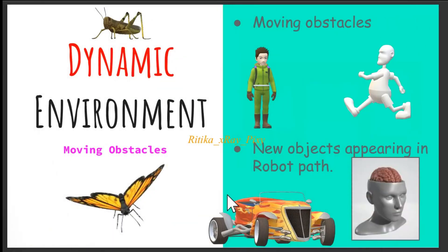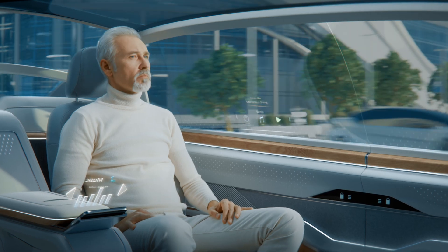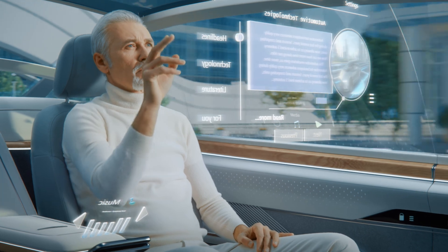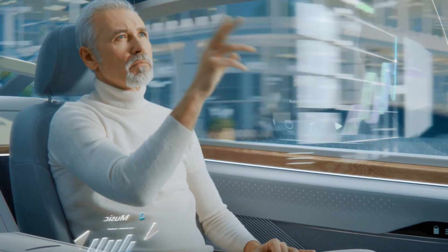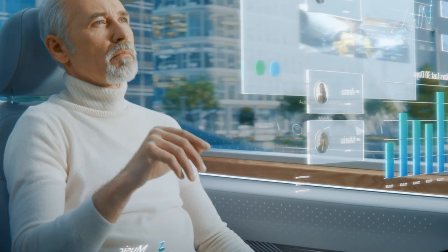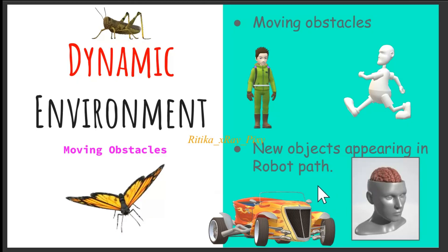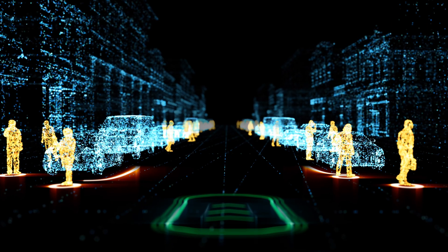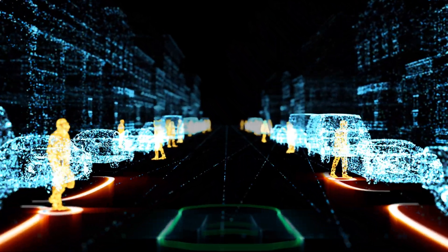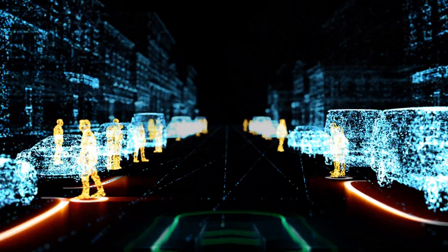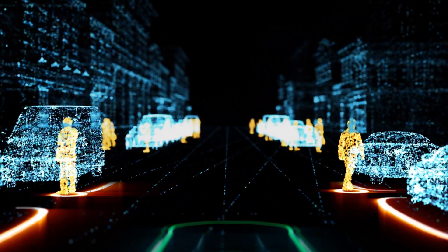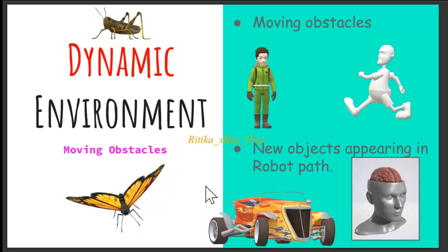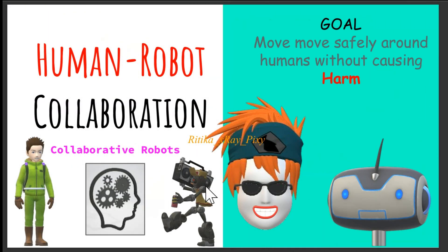In dynamic environments, we have moving obstacles or new objects appearing suddenly in the robot's path. For example, self-driving cars need real-time path planning to avoid pedestrians or vehicles that suddenly cross their path. We need proper path planning in dynamic environments because we have moving objects and moving obstacles, requiring both robot safety and the safety of pedestrians and others.